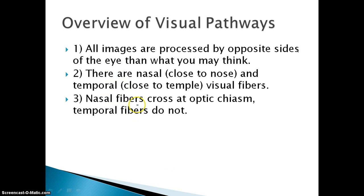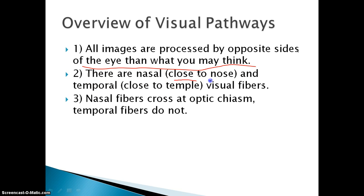So let's review that. All images are processed by opposite sides of the eye than what you may think, because the lens of the eye inverts the image that you look at. There are nasal fibers — close to the nose — and temporal fibers — close to the temple. Nasal fibers have to cross over at the optic chiasm, but temporal fibers do not.